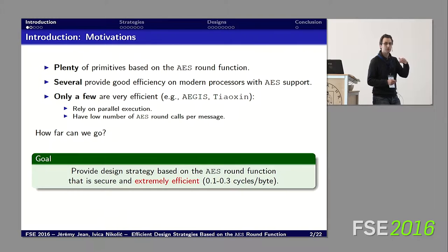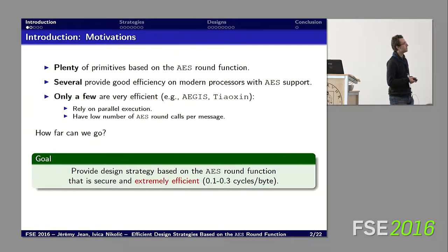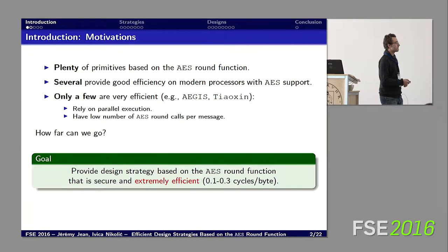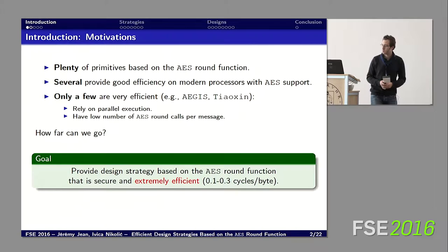The reason for this efficiency is mostly because they rely on parallel execution of the AES instructions inside the processor, and because they use a very low number of AES round function calls inside their design. So in this work we're interested in seeing how far we can go — how far can we decrease the number of AES round function calls in a design to achieve very efficient constructions. The goal is to provide ideas or strategies to design constructions based on the AES round function that are both secure and extremely efficient, meaning something below 0.3 cycles per byte.